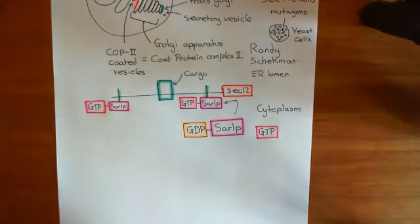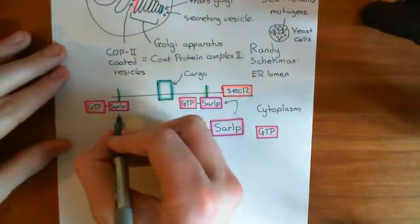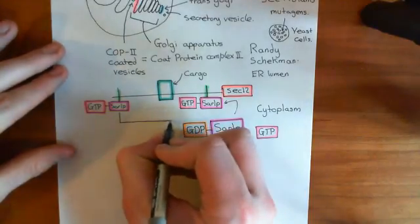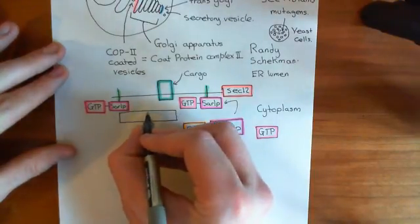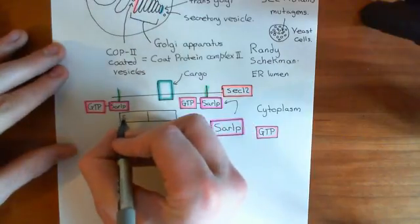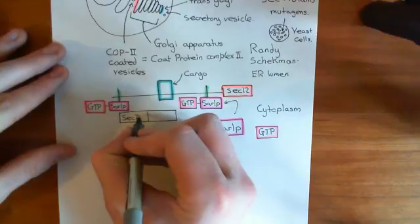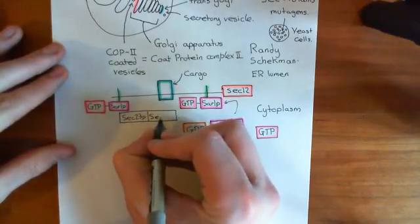Now, other proteins are going to come and associate with this SAR 1p protein. So a complex, well, a heterodimer is going to come and associate with this SAR 1p. So here comes along a heterodimer of two proteins, and these two proteins are sec proteins again. So one of them is sec-23p here, and the other is sec-24p.